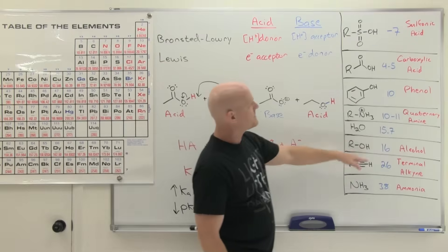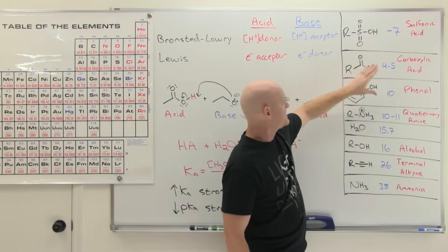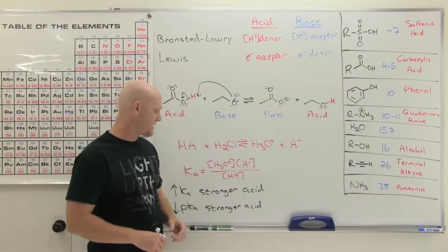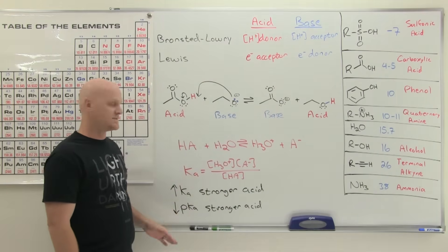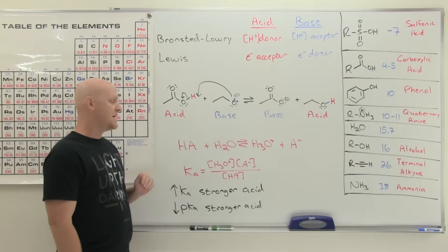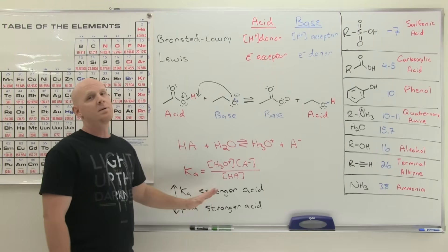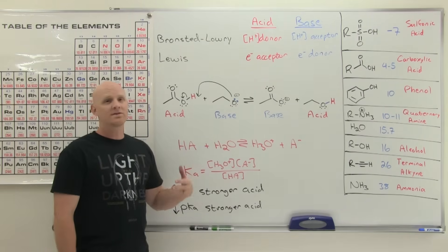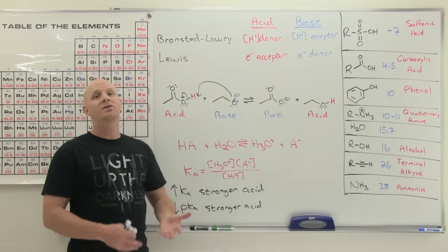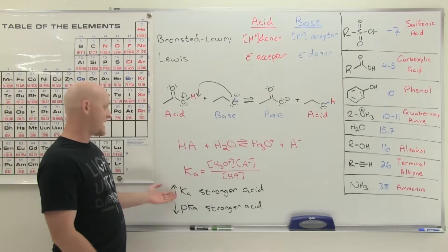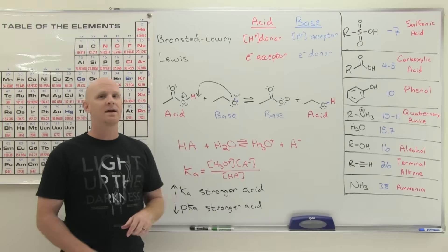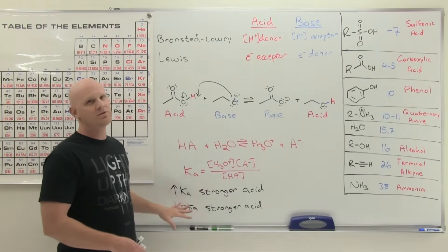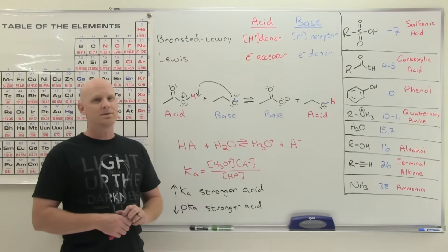I've given you a bunch of different pKa's on the study guide — for different functional groups in organic chemistry that you'll want to pretty much memorize. We'll use pKa's way more often than Ka's, though you should still know what a Ka is and that a higher Ka means a stronger acid. We can also talk about Kb's and pKb's for bases: higher Kb means stronger base, lower pKb means stronger base — but Ka's and pKa's will be used far more often.